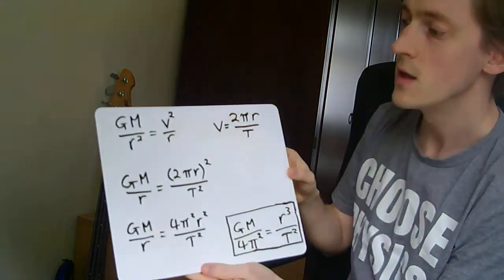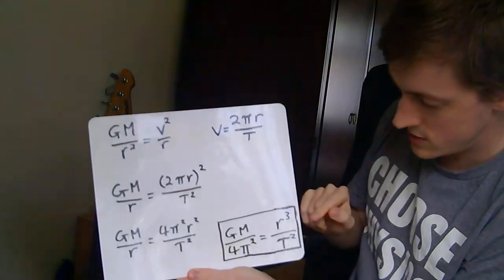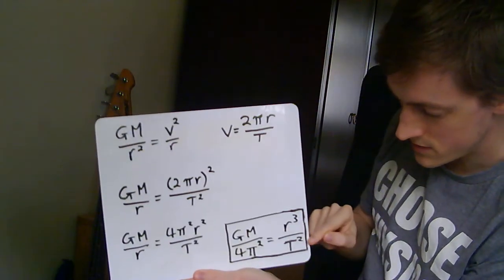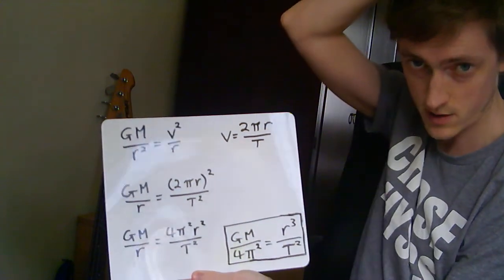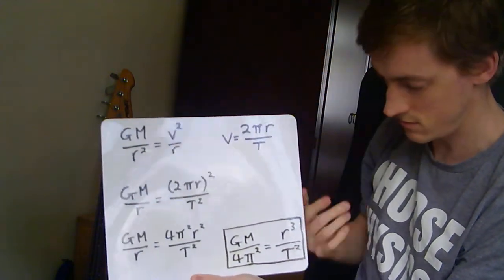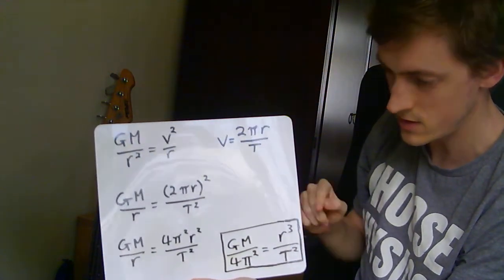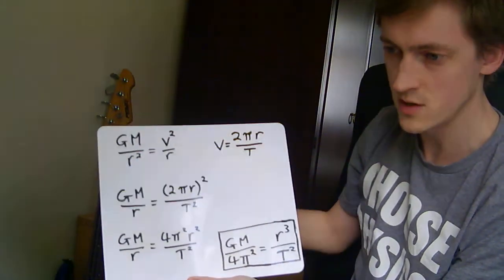So here's the idea. Kepler's third law states that r cubed over t squared is the same for everything orbiting the Sun. In actual fact, it says that r cubed over t squared is the same for all objects orbiting a certain body.